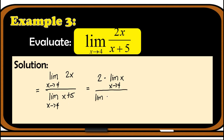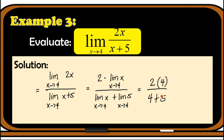For the denominator, we apply the limit of addition: the limit of x as x approaches 4 plus the limit of 5 as x approaches 4. Applying the limit of identity gives 4, and the limit of the constant 5 is 5 itself, so 4 plus 5 equals 9. The numerator becomes 2 times 4 which is 8. So we conclude that the limit of 2x over x plus 5 as x approaches 4 is equal to 8 over 9.